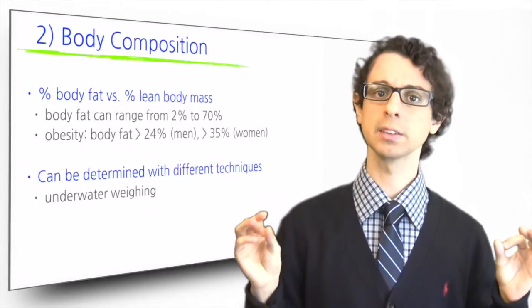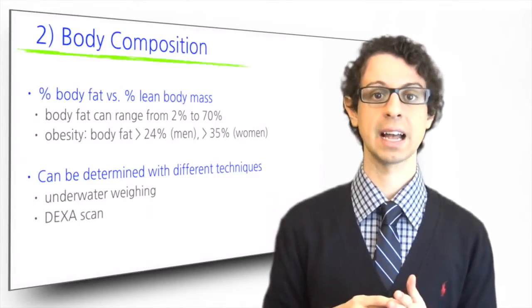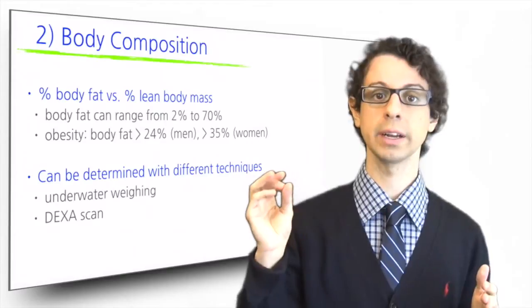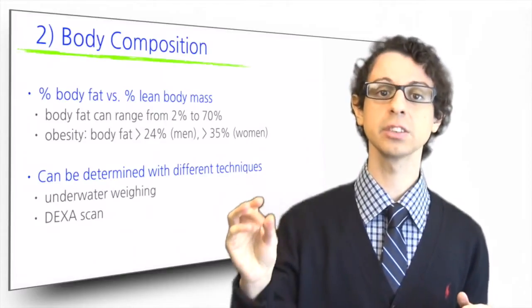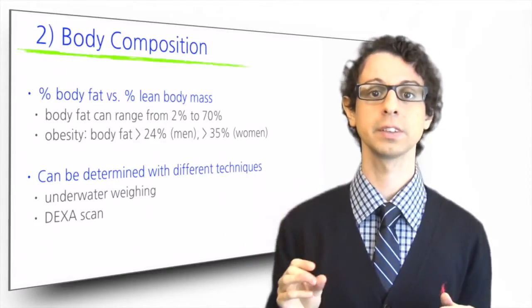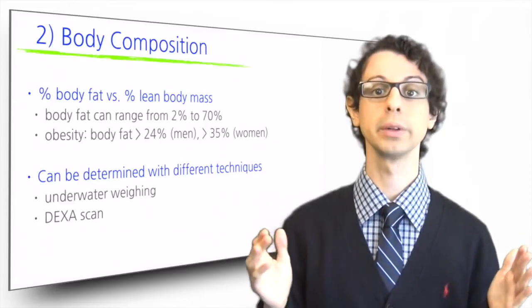The most accurate, although expensive technique is a DEXA scan, which uses low doses of x-rays to identify the percentages of fat tissue, fat-free soft tissues and bones, as well as bone mineral density.